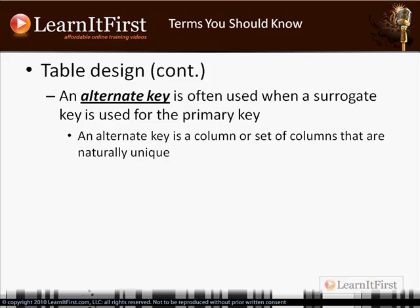A social security number is theoretically unique — that's great if you're a small company with a hundred employees. But if you are a hospital dealing particularly with elderly people born in the 1910s, 1920s, 1930s, and 1940s, there were many cases of duplicate social security numbers.